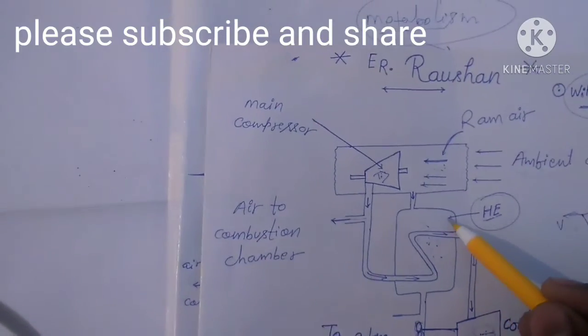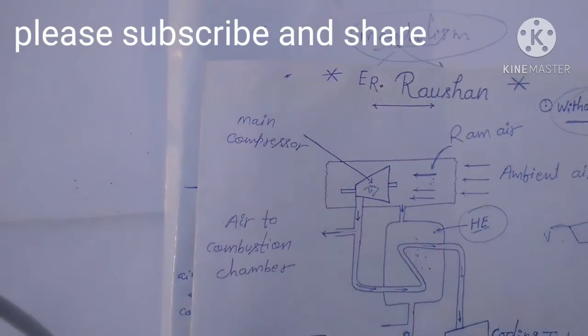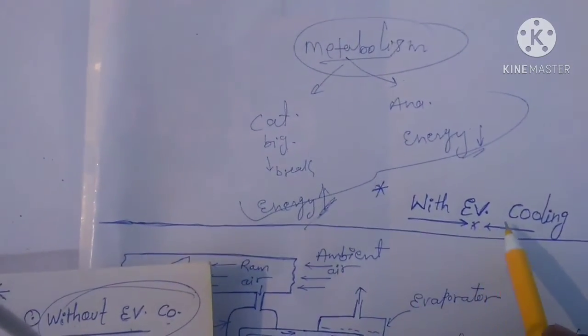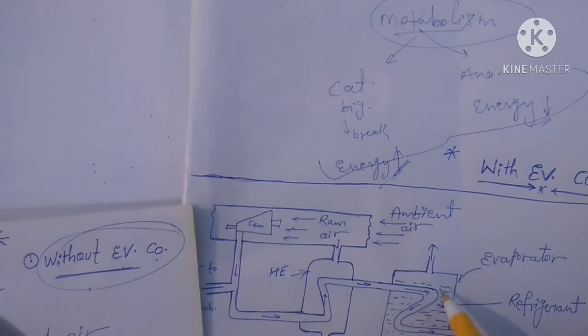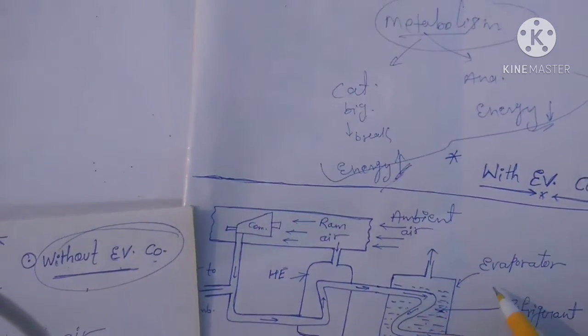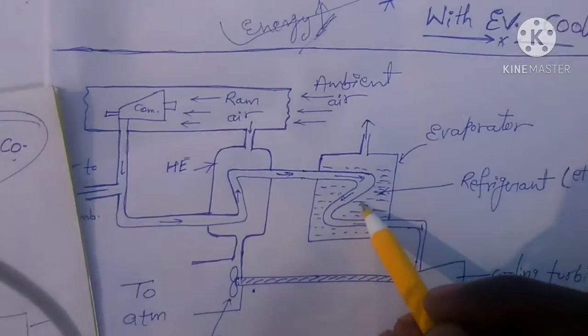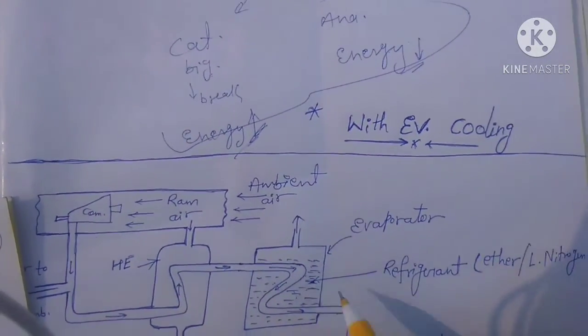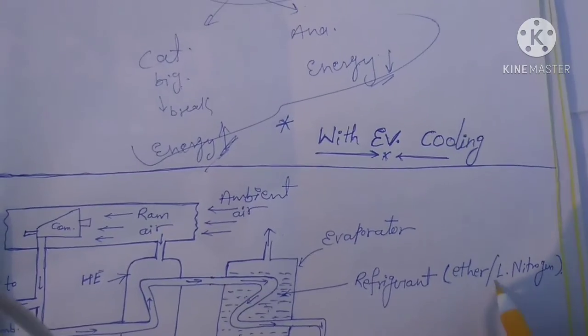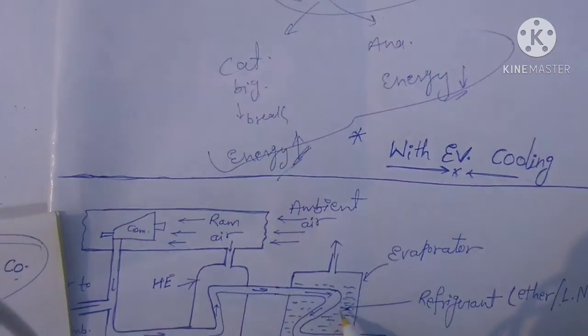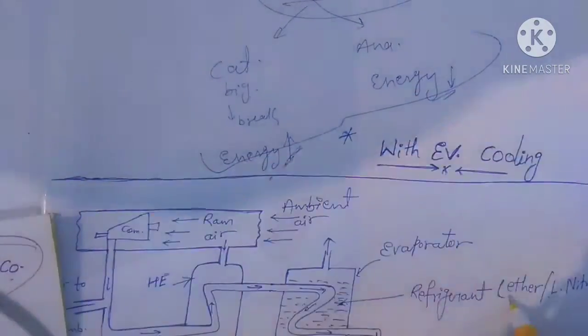Here you see the figure - only heat exchanger is used, but with evaporative cooling we use an evaporator. This evaporator has refrigerant, which may be ether or liquid nitrogen. These refrigerants used are ether or liquid nitrogen.